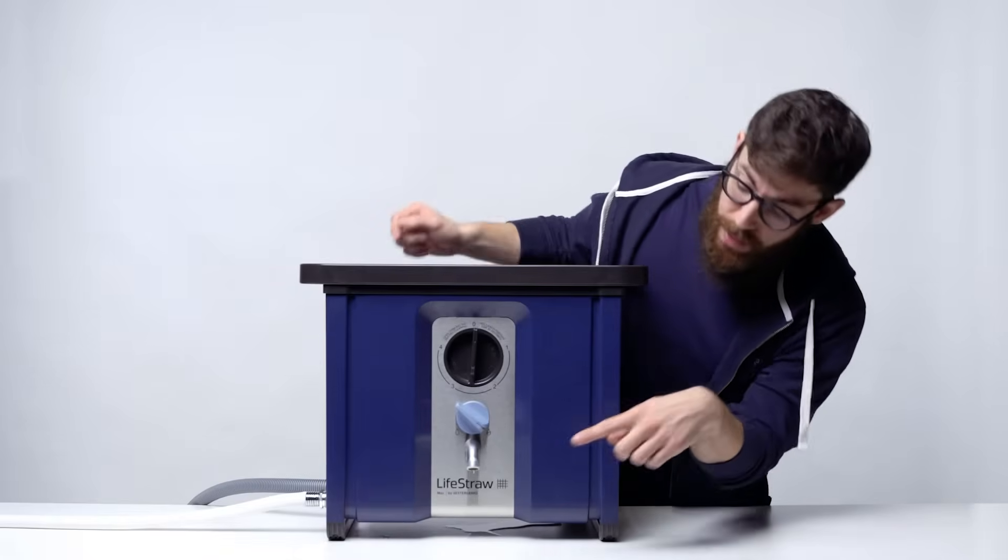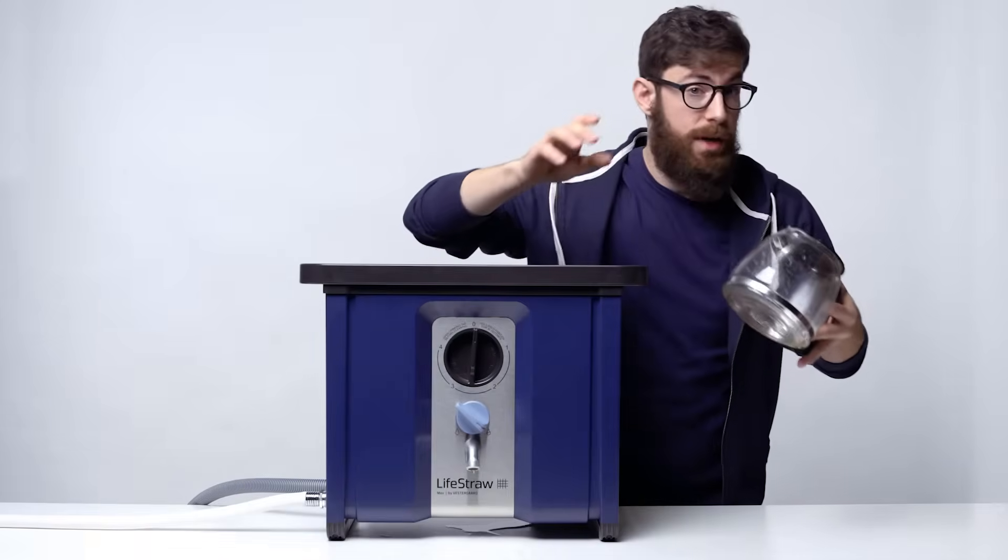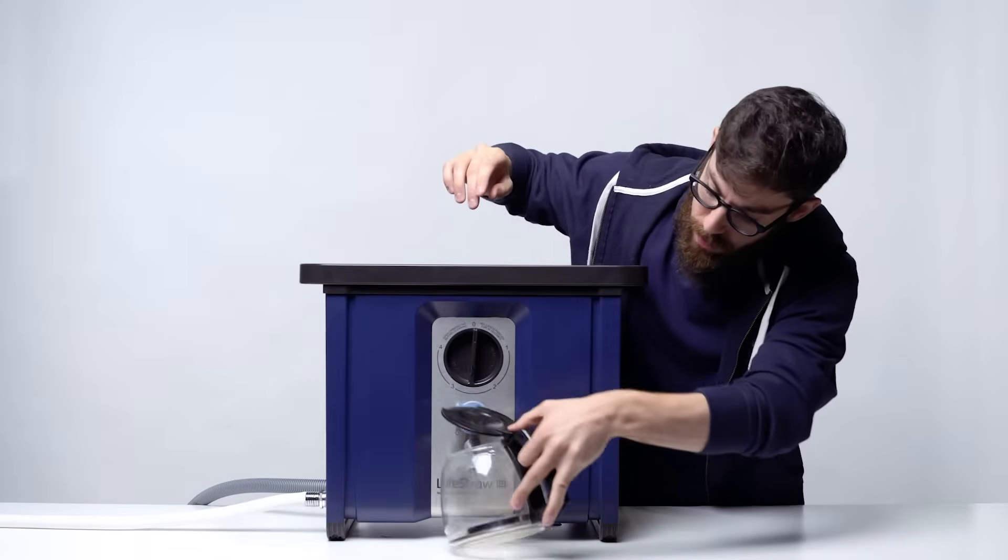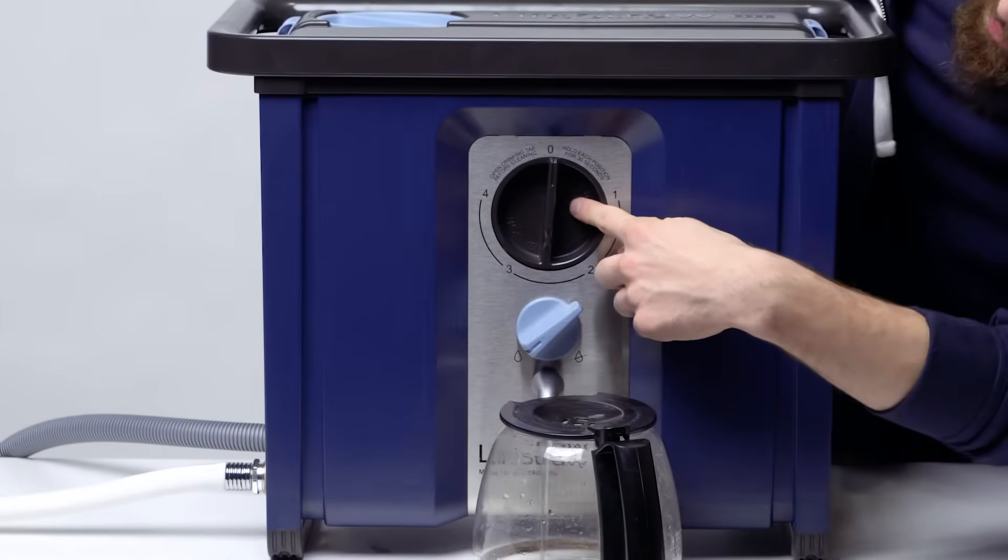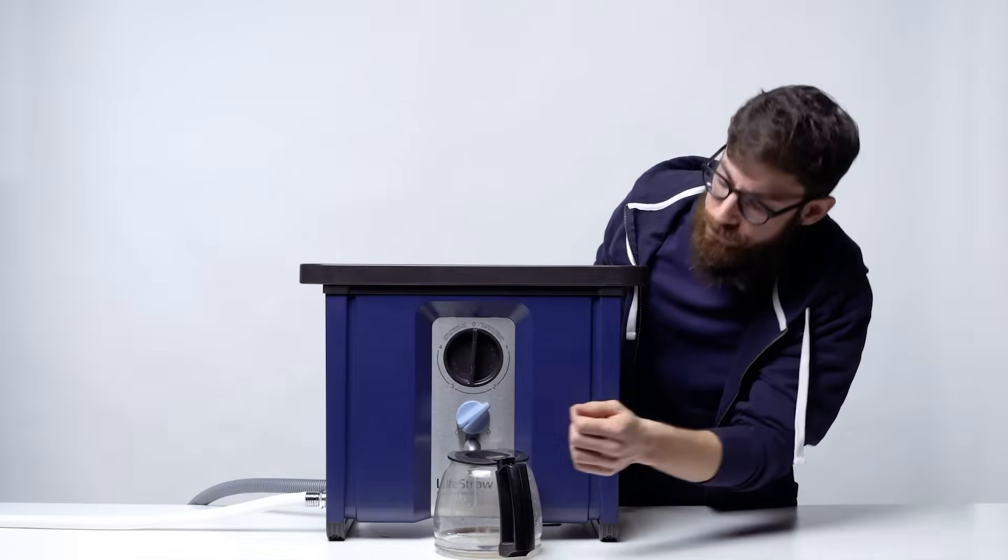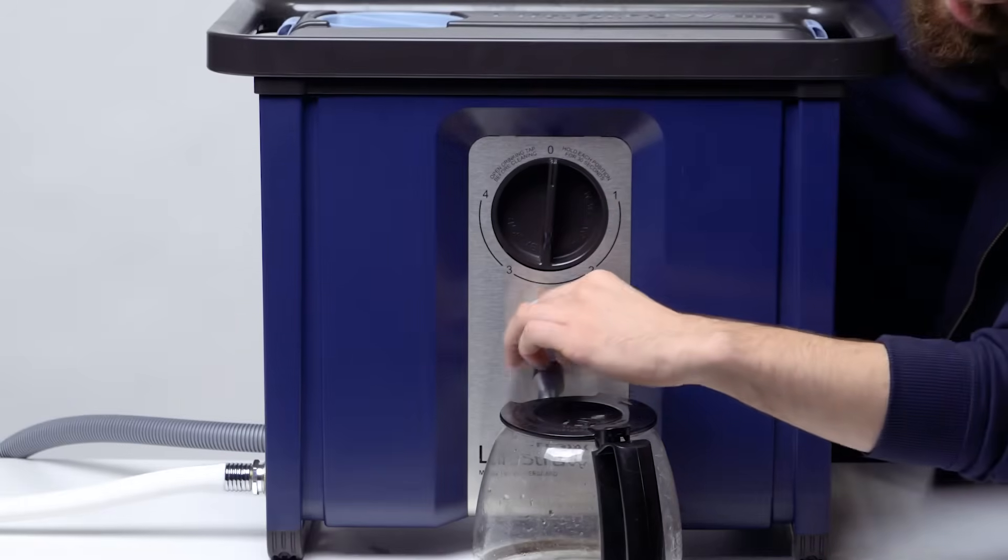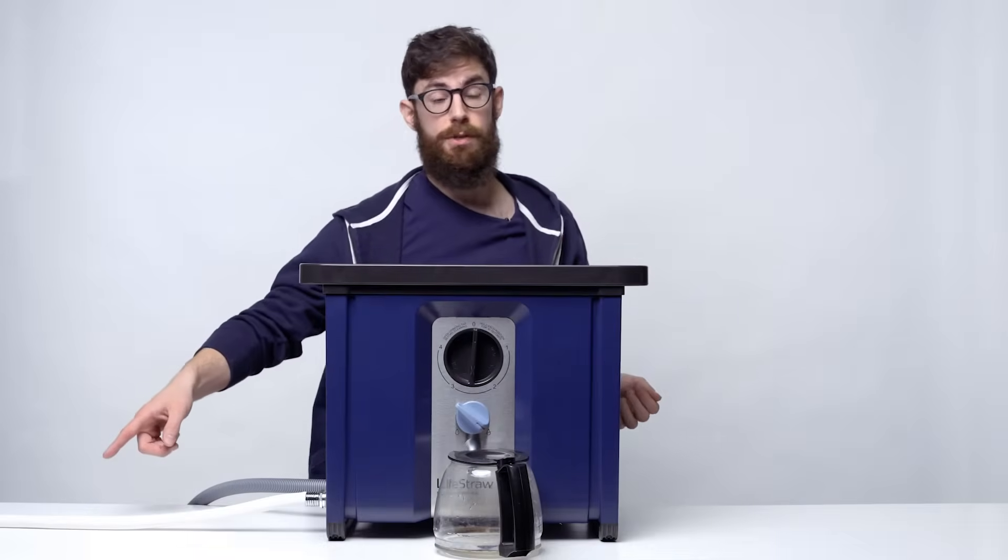When you're ready to use your Max, make sure you have a cup or something ready. You turn your drinking dial to on and you have your backwash position to zero. Otherwise, it's not going to work. When you're done using your Max, turn the water off and make sure your water source is off as well.